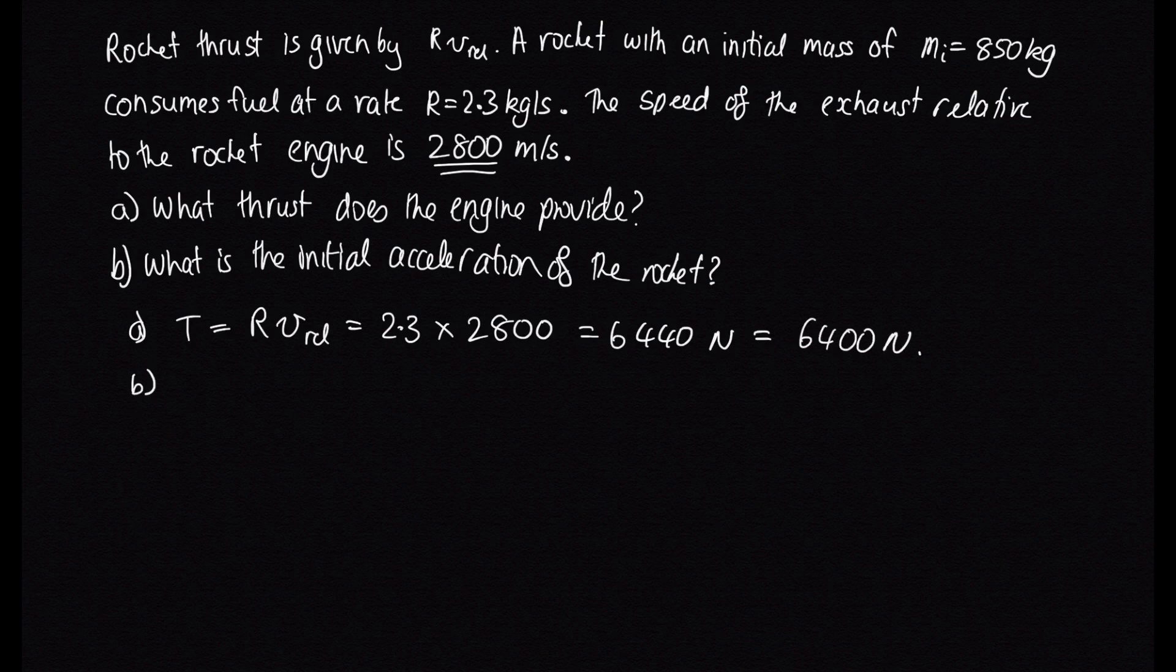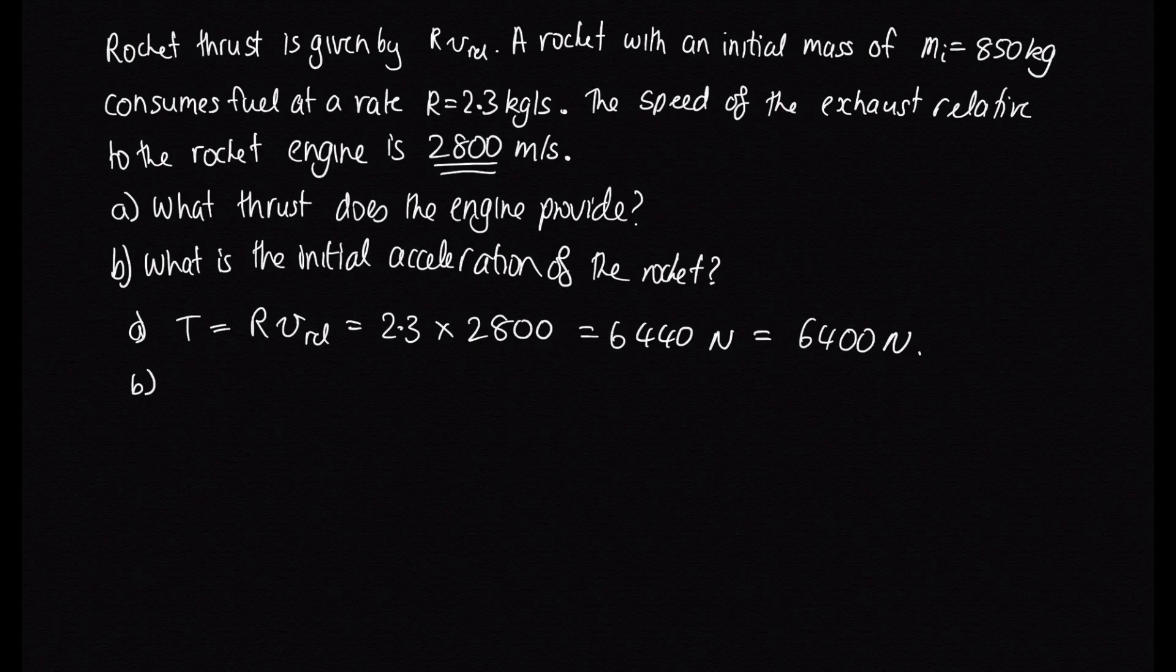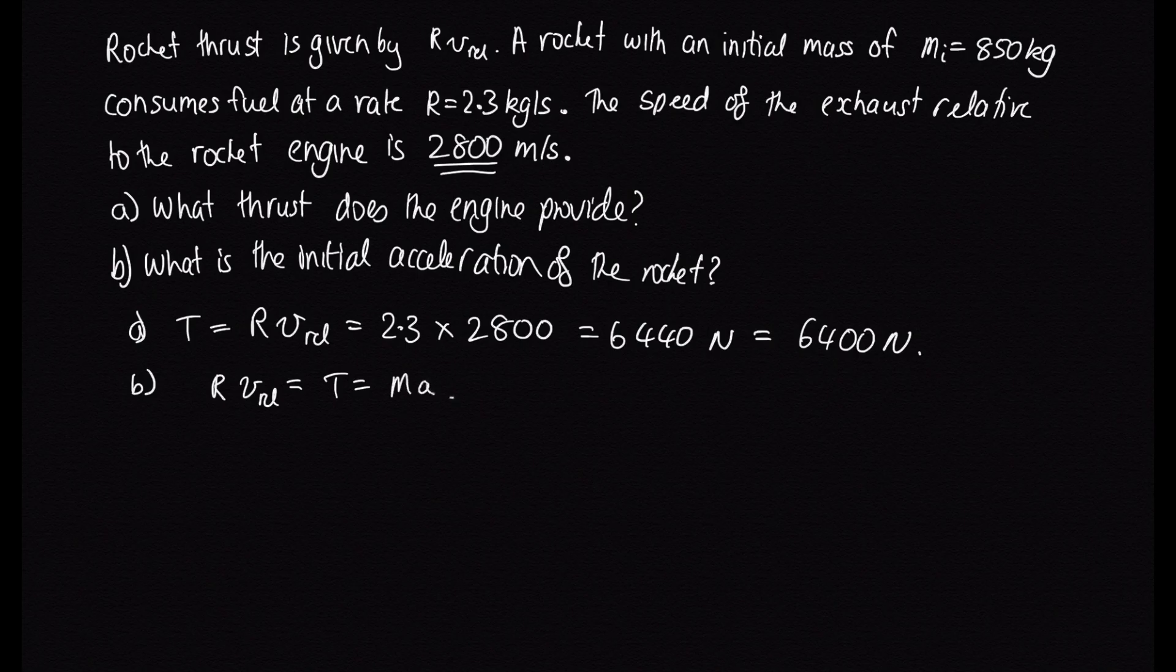Okay, now part B, what is the initial acceleration of the rocket? Okay, we just derived an equation for the acceleration of the rocket. We derived the equation that r times v_rel, that's the thrust that we've just calculated up here, is equal to ma, which makes a lot of sense because that's just Newton's second law, which is telling us that the force acting on the rocket accelerates the rocket.